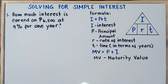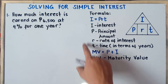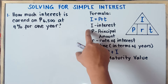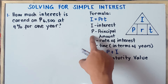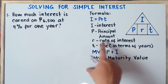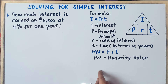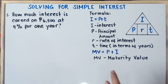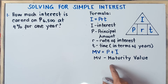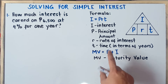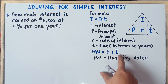Now to solve for simple interest, our formula would be I equals PRT. I stands for the interest, P is the principal amount, R is the rate of interest, and T is time in terms of years. We also have the formula for MV — maturity value — so MV equals the principal plus the interest.